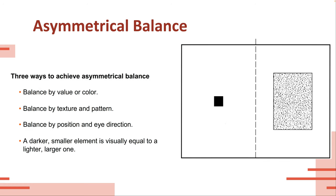There are a variety of different ways to create asymmetrical balance, touching on topics we've already covered: by value or color, by texture or pattern, by position or eye direction — leading the viewer's eye through a piece. By value or color, a darker, smaller element is roughly visually equal to a larger, lighter one. In this case, we have a dark black smaller square compared to a larger, lighter square — the smaller dark object will carry just about the same visual weight as a larger, lighter object.